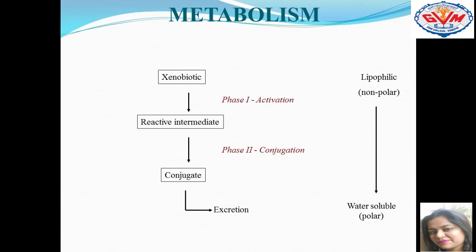What are xenobiotic chemicals? These are agents that cannot be directly degraded in the environment by microorganisms. For their degradation, we need specific enzymes known as xenobiotic metabolizing enzymes. These processes occur in two phases. Phase one is known as activation, and phase two is known as conjugation. In phase one, xenobiotic compounds are converted into reactive intermediates. In phase two, they form conjugates, and ultimately they are excreted out through the urine of the individual.